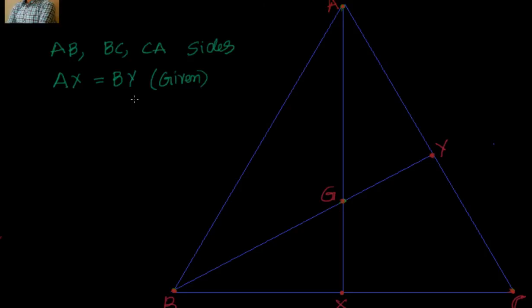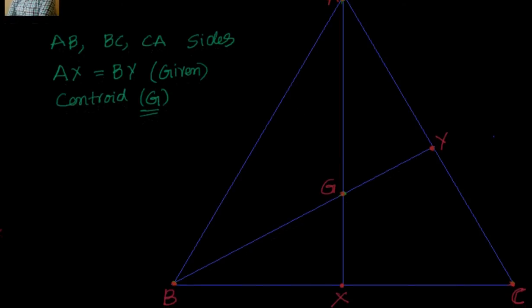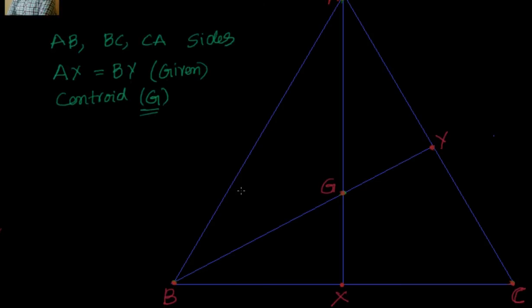And we know that the point of concurrency of medians is nothing but equal to centroid. So can I say centroid is at G, at point G. Now what we have to prove?